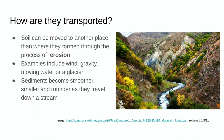Sediments become smoother, smaller, and rounder as they travel down a stream. If you've ever gone to the Hudson River and noticed it looks brown, that's not because it's dirty or polluted — it's because it's carrying sediments down the river, eroding them from upstream.